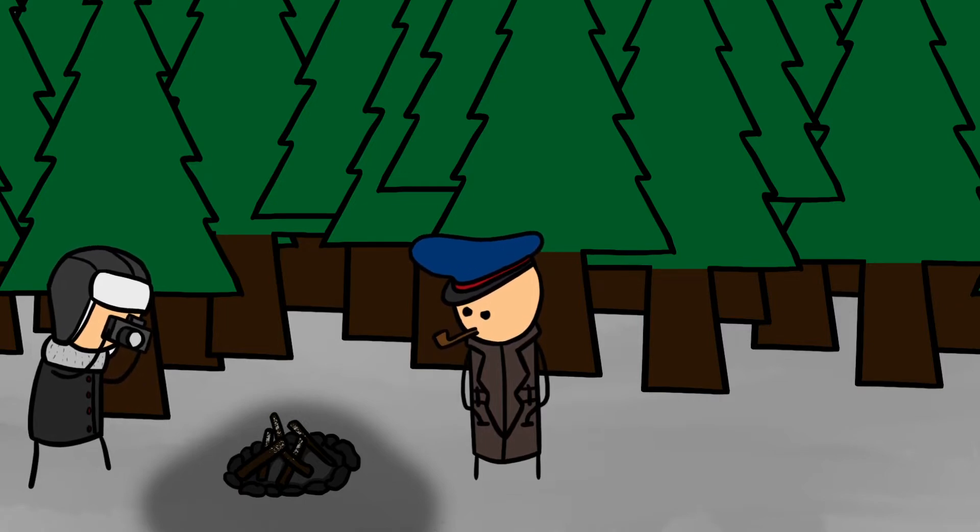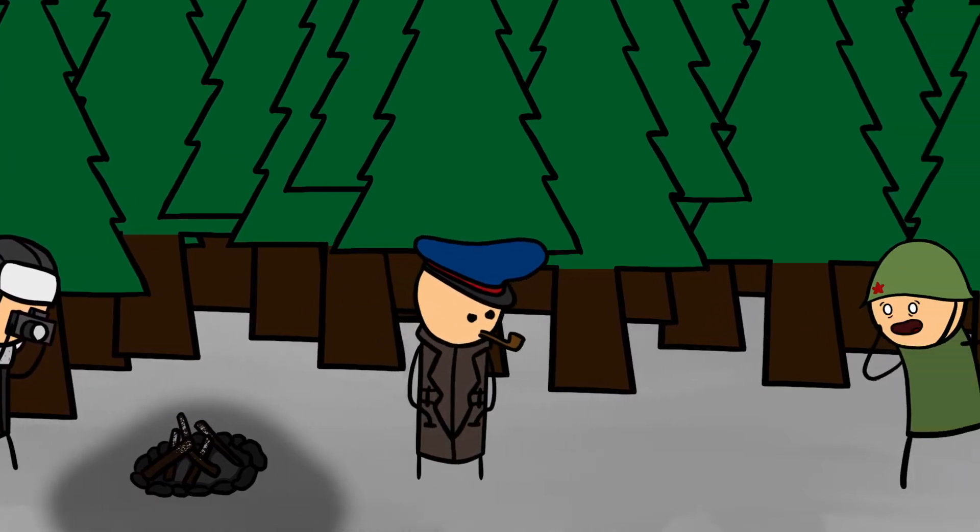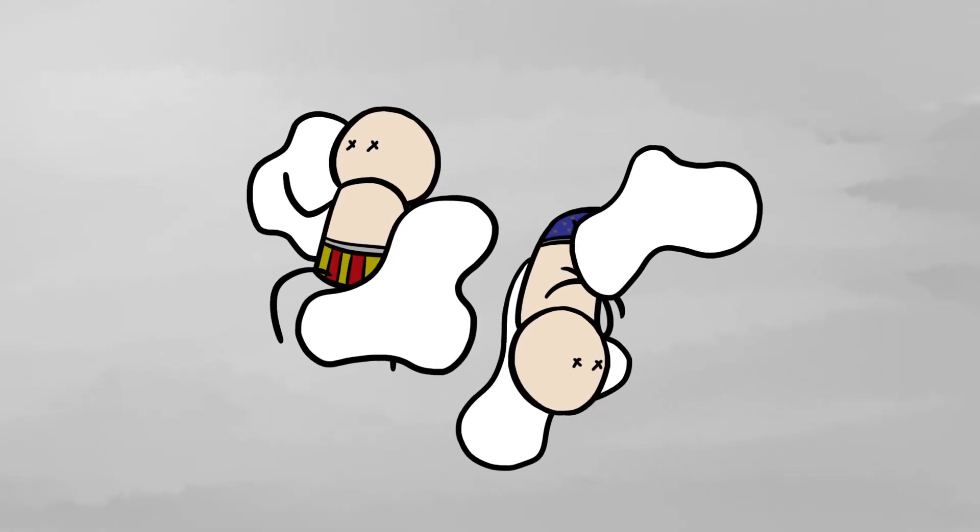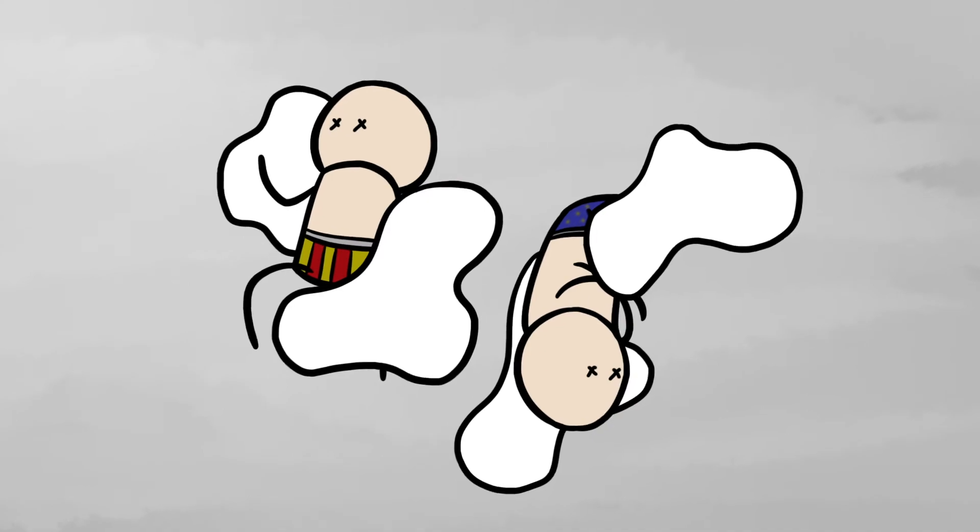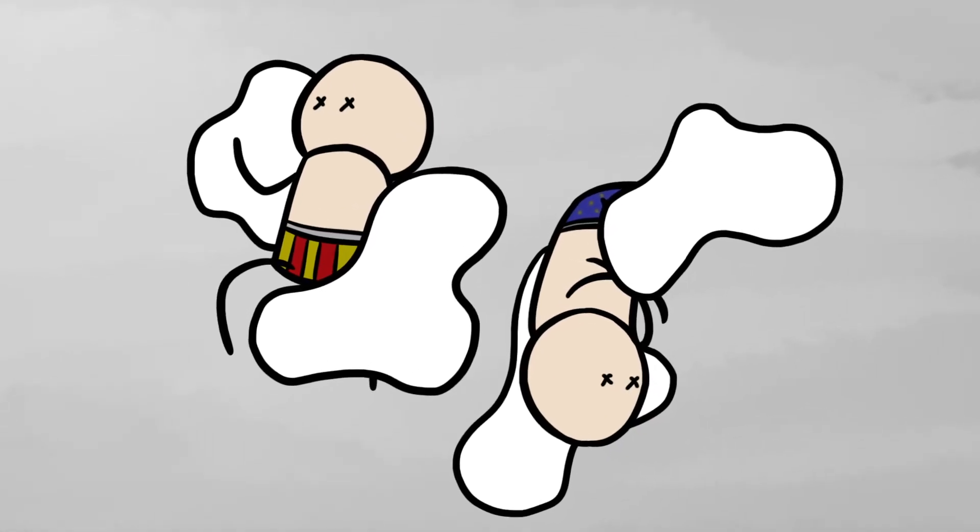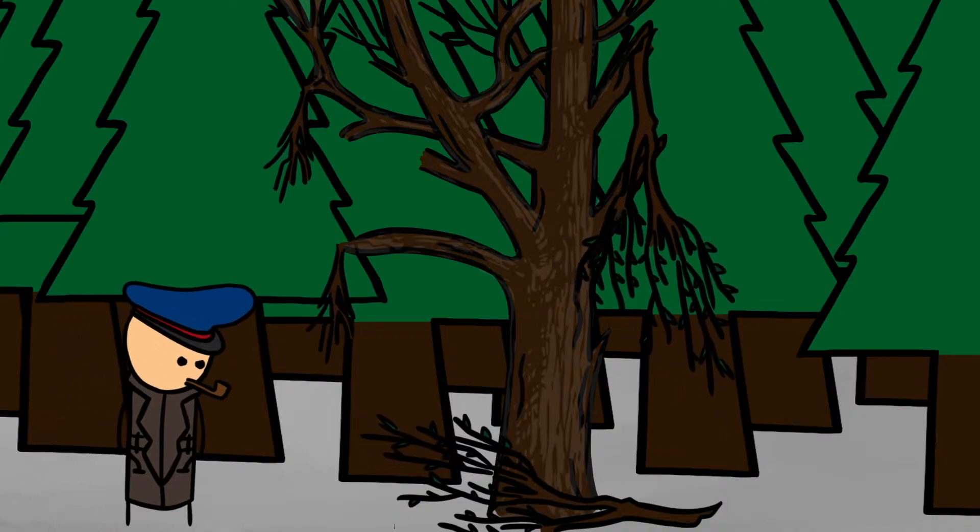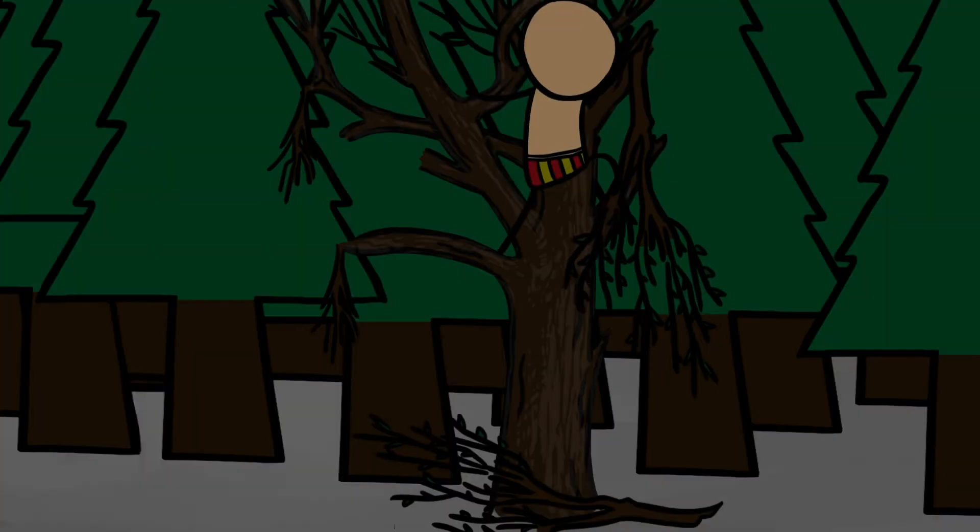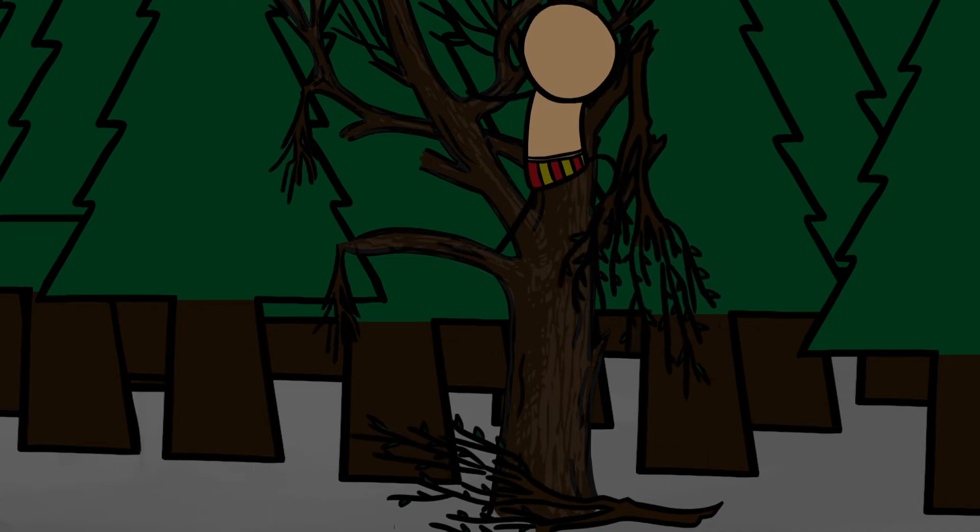At the forest edge, the searchers found the visible remains of a small fire. They found the first two bodies, shoeless and dressed only in underwear. The branches on the tree were broken up to five meters high, suggesting that one of the skiers had climbed up to look for something, perhaps the camp.